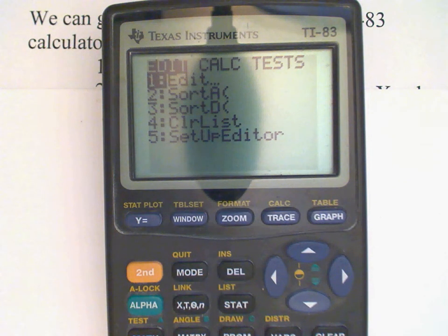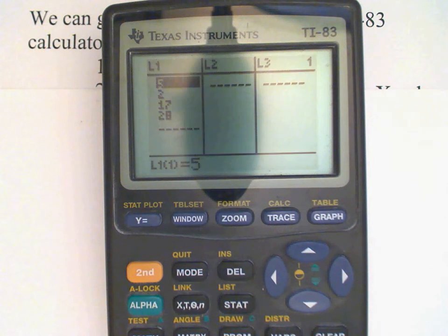The first thing that we need to do is to edit the data set, so we press enter. And then you see this screen here with the several columns for data sets. You may already have some data there in L1, and if you do, you probably need to clear it out.